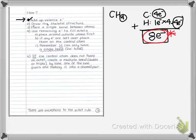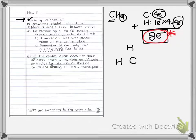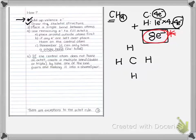Step two is to draw the skeletal structure — simply how you think the atoms might be arranged. Often, but not exclusively, the first element will be in the middle. So I put carbon in the middle with the four hydrogens around it. Step three is to place a single bond between the atoms. Each single bond represents two electrons.